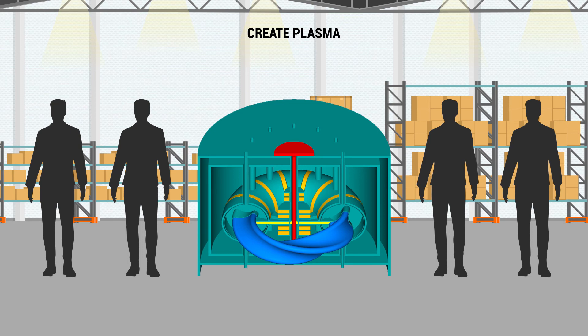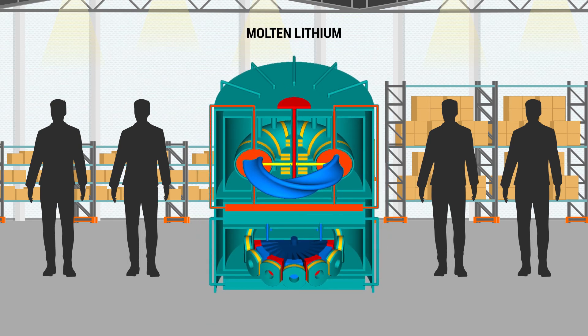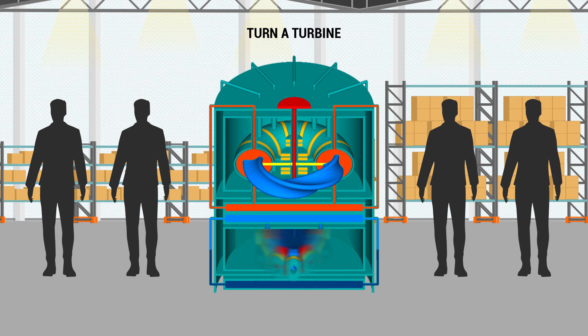The seventh step in the process is to heat the molten lithium with the byproducts of the fusion reactions. The eighth step is to run water through the molten lithium to produce steam. The final step in the process is to use the steam to turn a turbine to produce electricity.